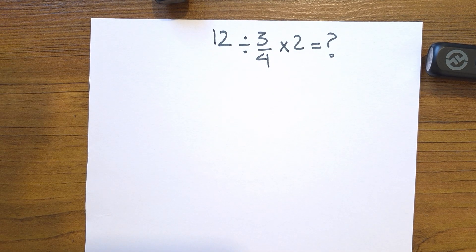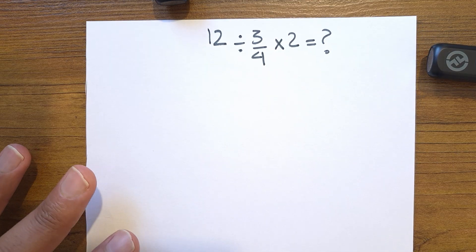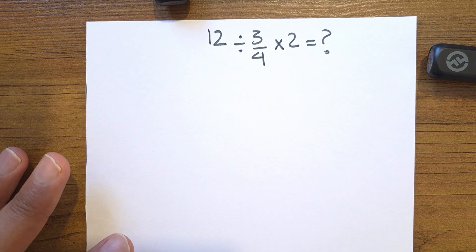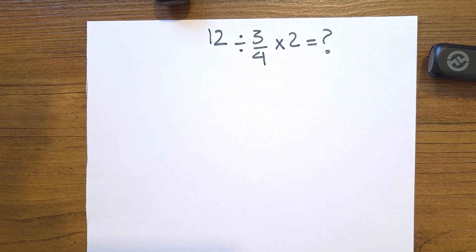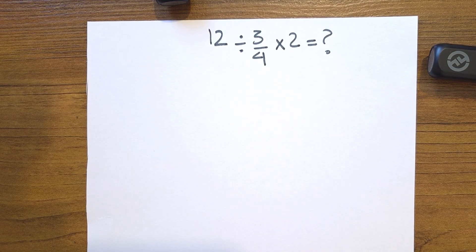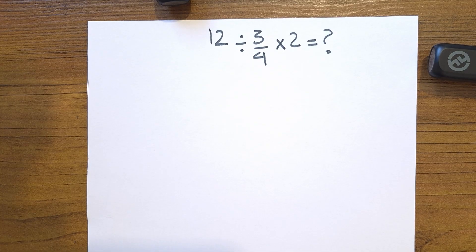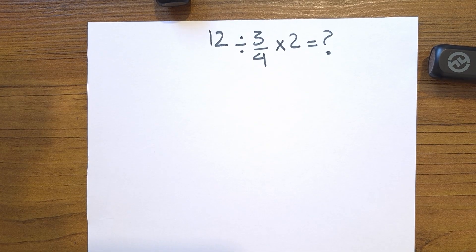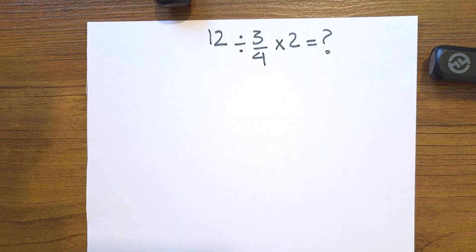Welcome to another episode on Prime Logic. If you want to solve this problem, please pause the video because I'm going to solve it right now. What is the value of 12 divided by 3 quarters, or 3 over 4, times 2? The answer is not 8, obviously.